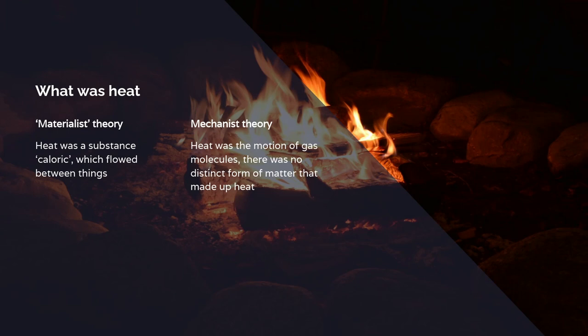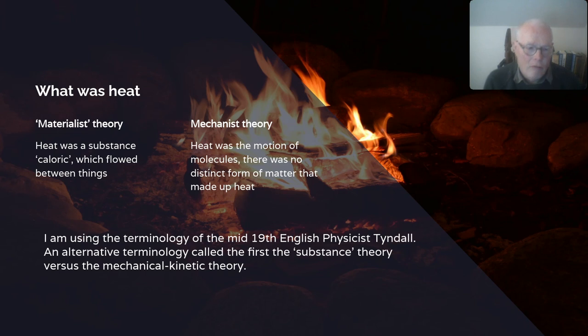So what was this heat or caloric? Well, in the late 18th, early 19th century, there were two theories of heat. There was what was called the materialist theory of heat, which was that heat was a substance, a type of matter, caloric, which flowed between things. And there was what was known as the mechanist theory of heat, which was that heat was the mechanical motion of gas molecules, and that there was no distinct form of matter that made up heat. Now in this I'm using the terminology of the 19th century English physicist Tindall, whose physics lectures Marx used to attend. He describes them in these terms of materialist and mechanistic theories of heat. You might alternatively call the first theory of heat a substance theory of heat versus a mechanical kinetic theory of heat.